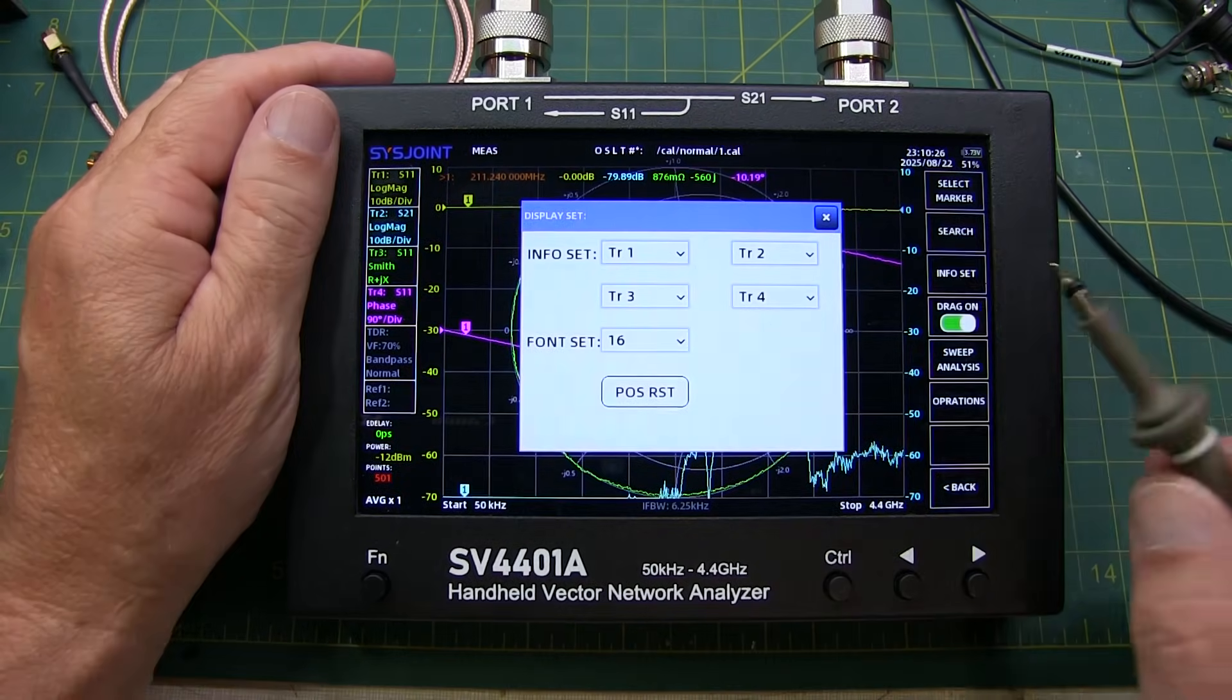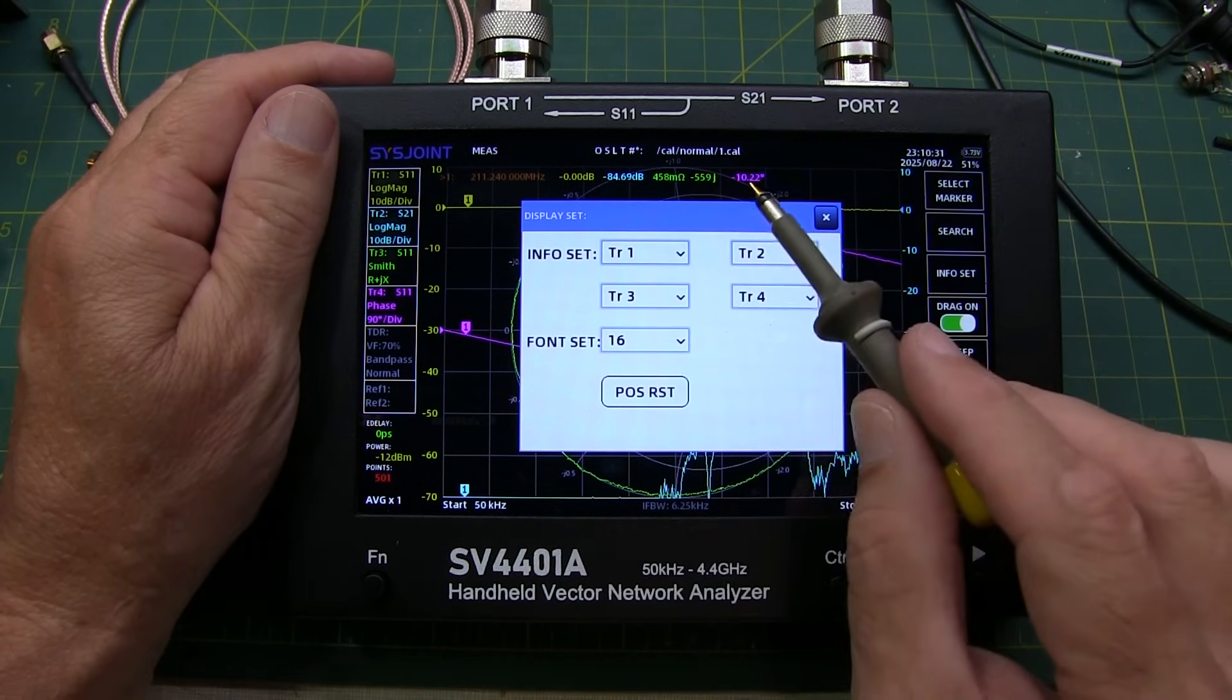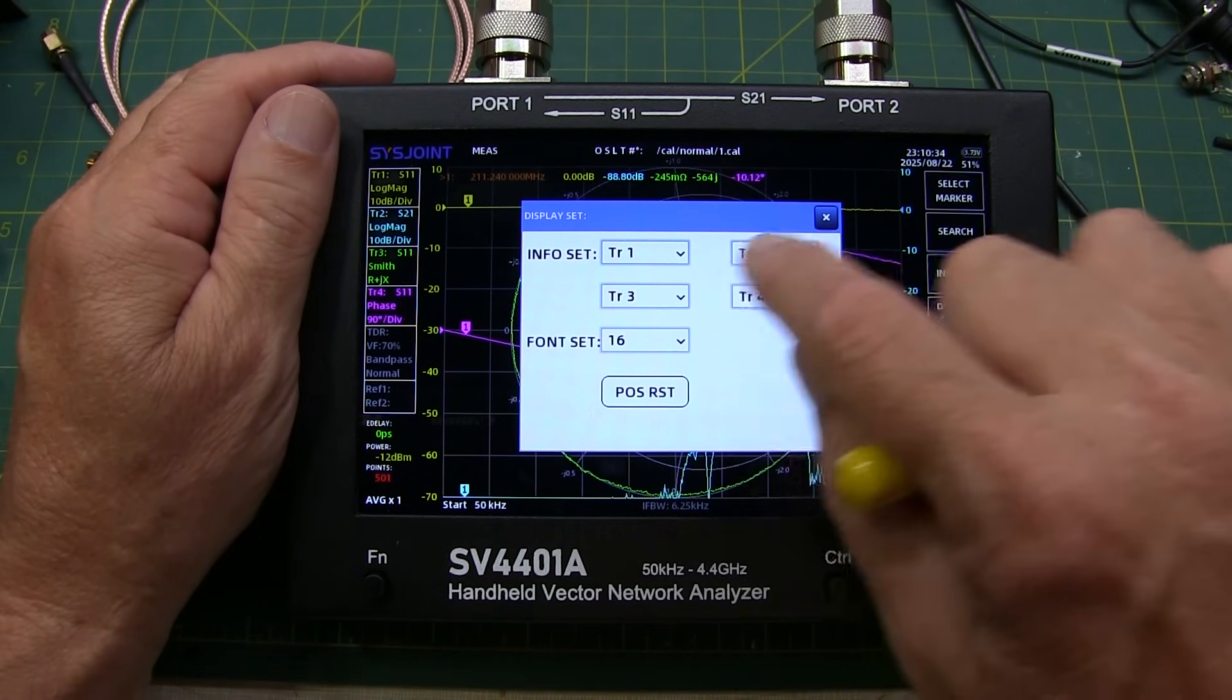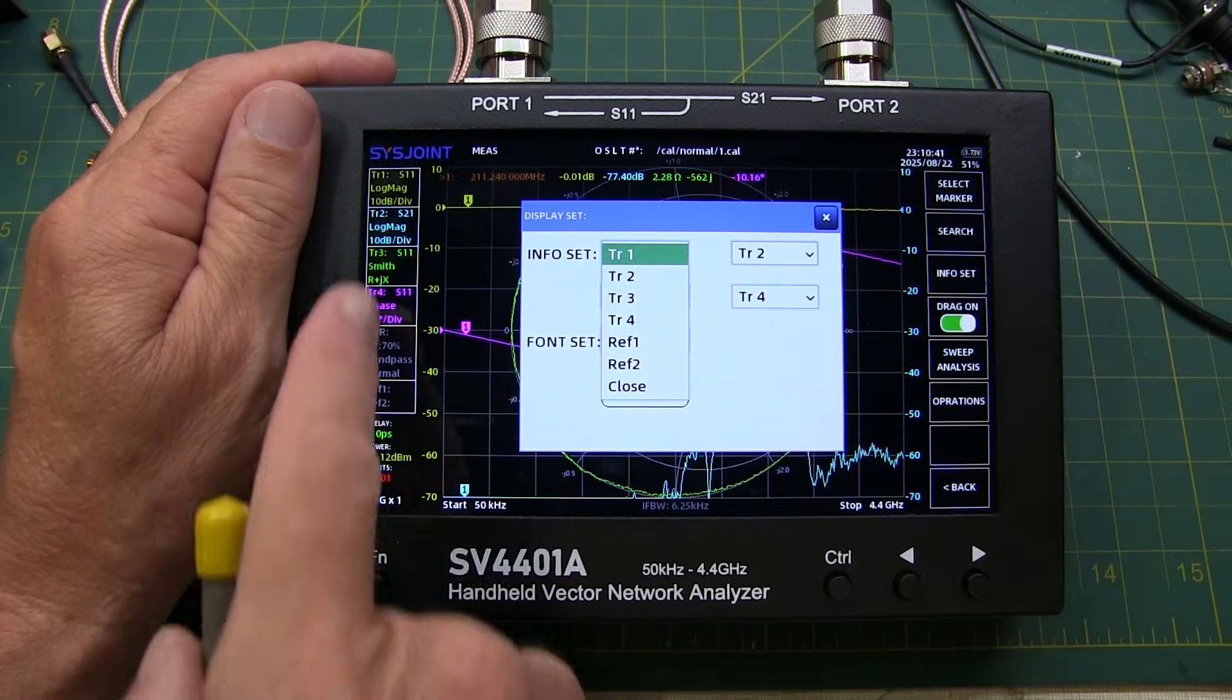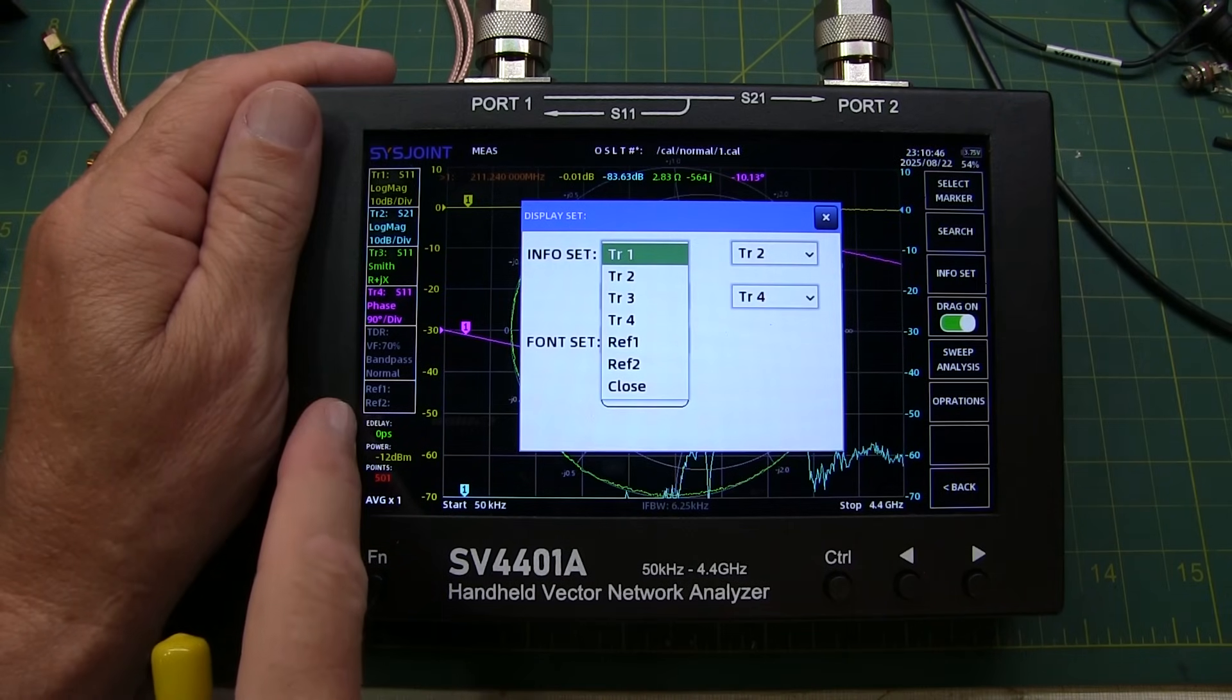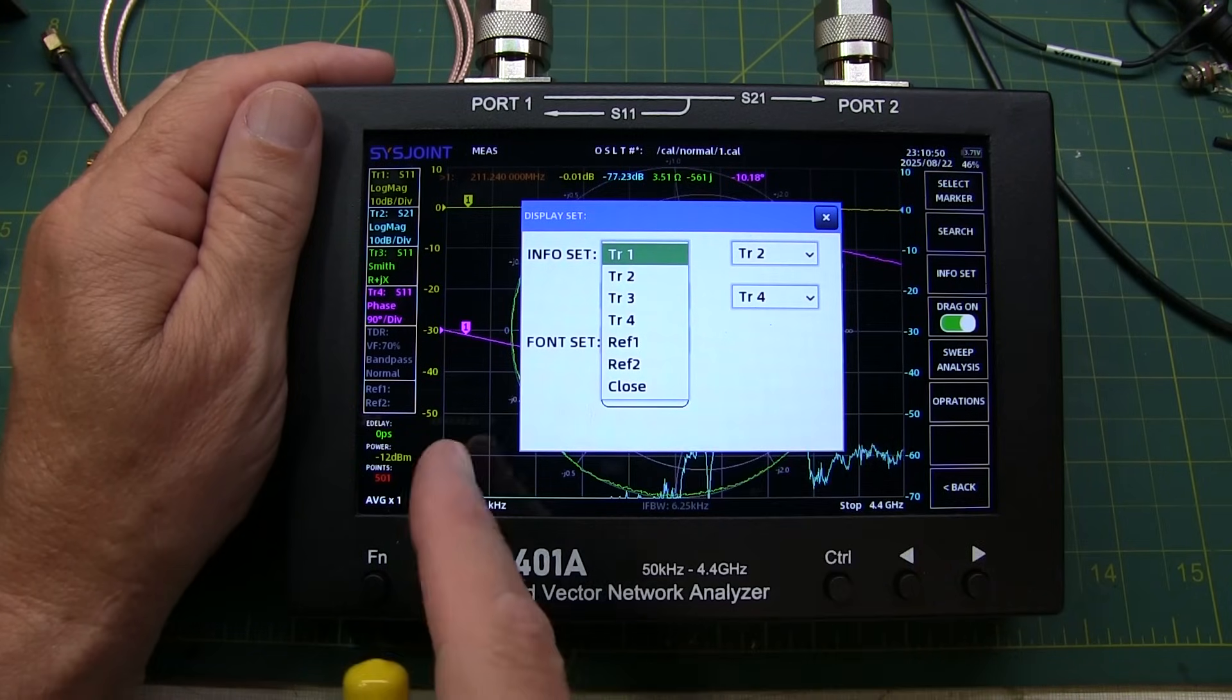The info set allows you to determine which marker readouts or what traces are going to be read out in the marker readouts. So I can pick from trace 1 through trace 4, which are these four traces here. You can also pick from reference traces as well. We can actually take any of these traces and bring up the two different reference traces up to make comparison measurements between one measurement and then another configuration.